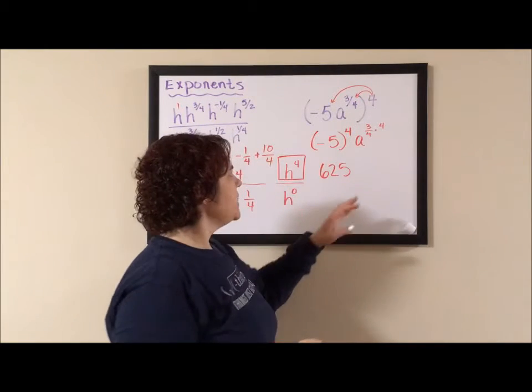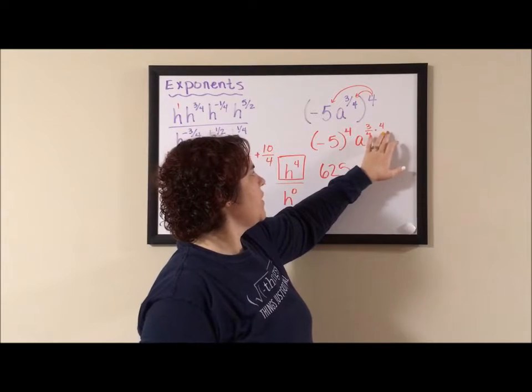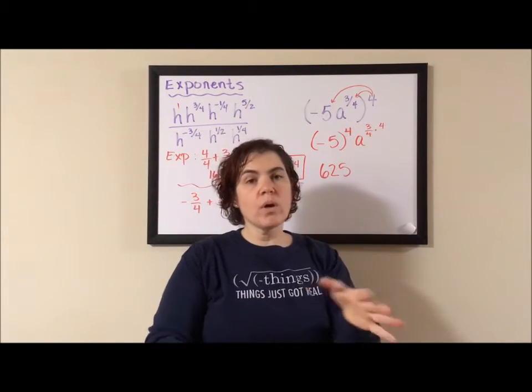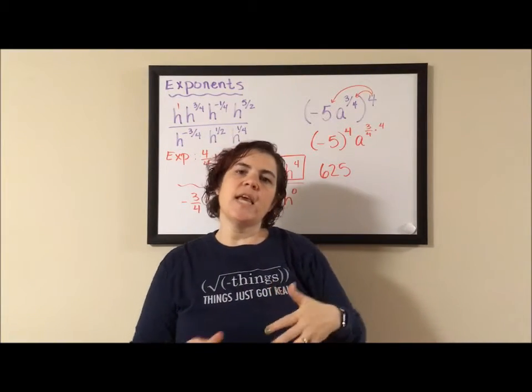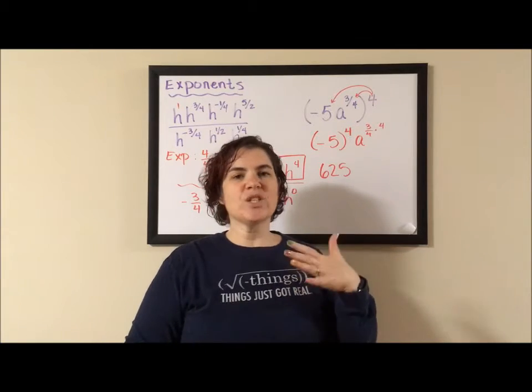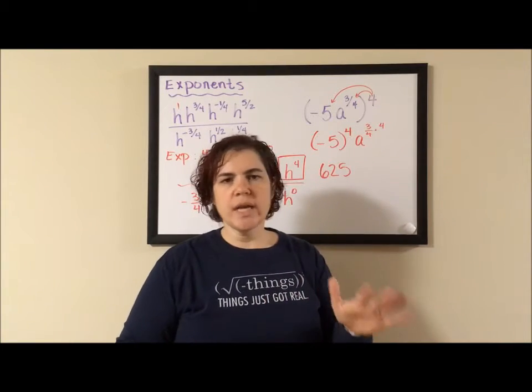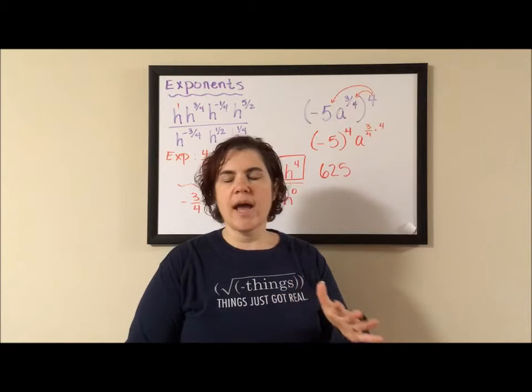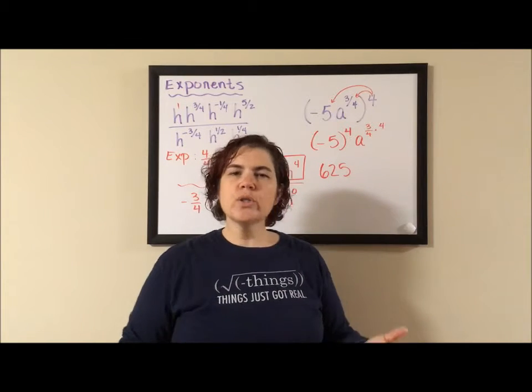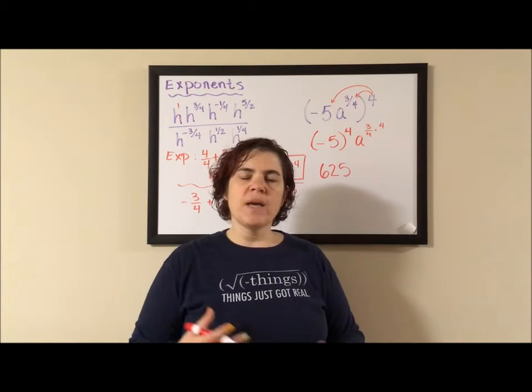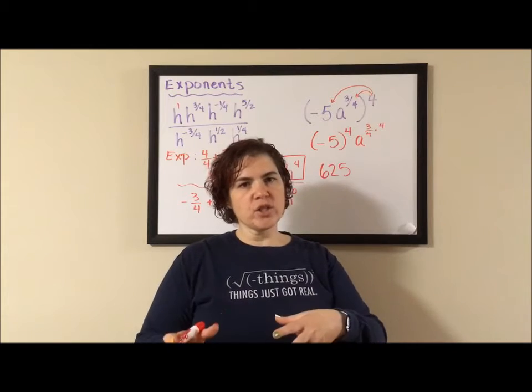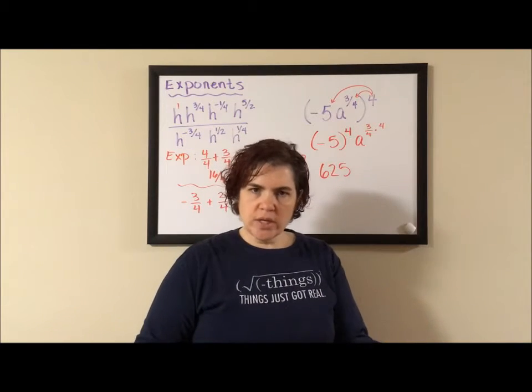The next problem I see is a lot of students multiply that four to top and bottom, or worse, they take the numerator and denominator and take it to the power of four. Don't take an exponent to an exponent. You're asking for trouble there. We're just doing basic multiplication. And if you can't remember how to multiply a fraction to an integer, make your integer a fraction.